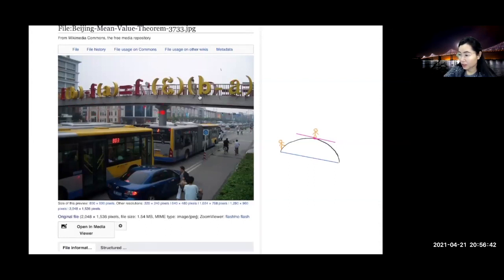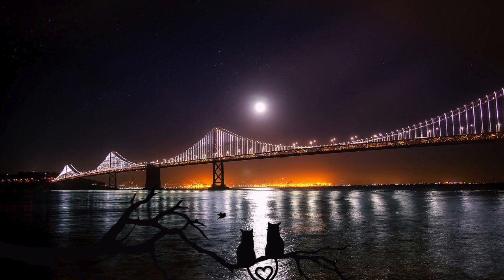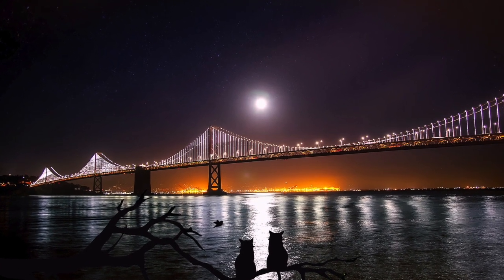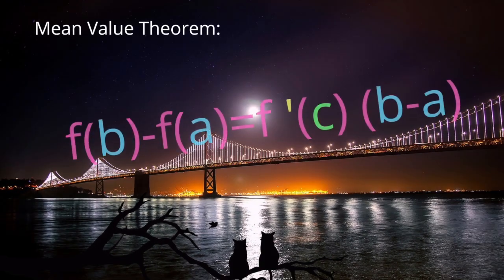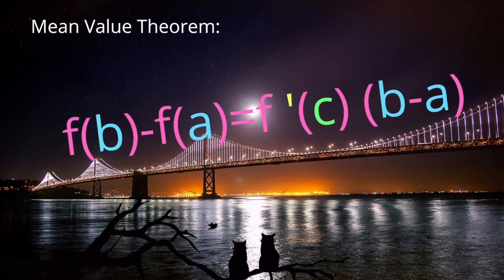This photo was taken in Beijing, the capital of China. In 2008, the government of Beijing celebrated the Mean Value Theorem and put it on the bridge. Now imagine that the Mean Value Theorem is celebrated here and put on the Bay Bridge.